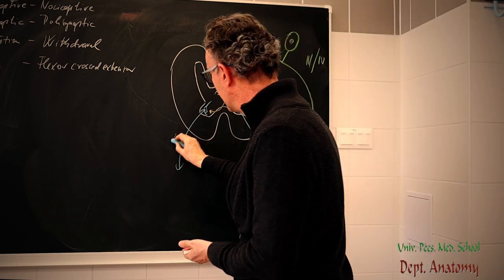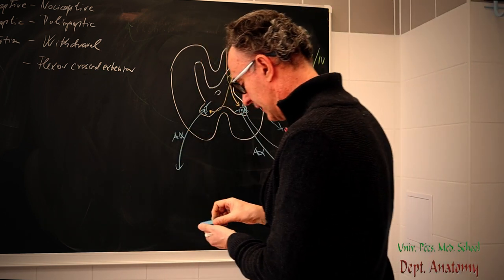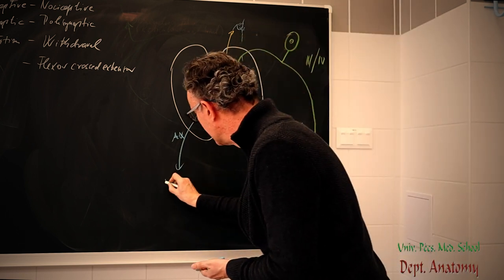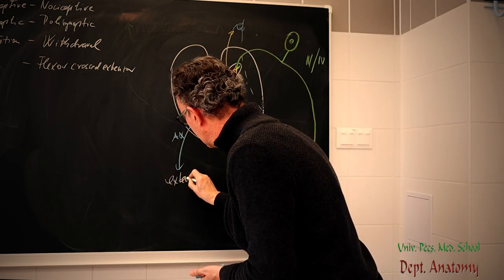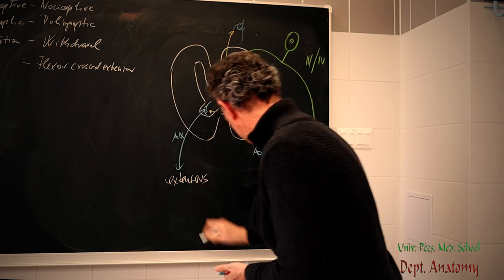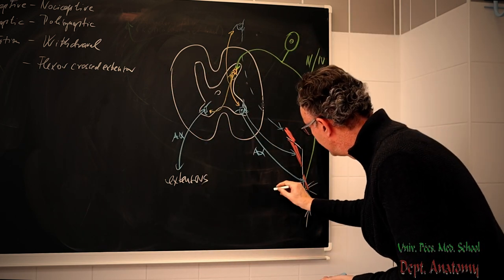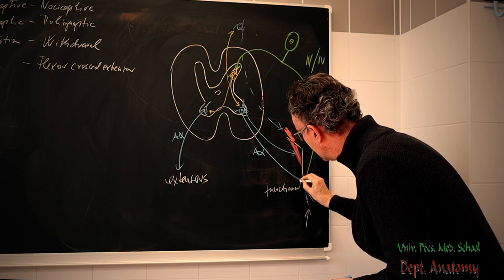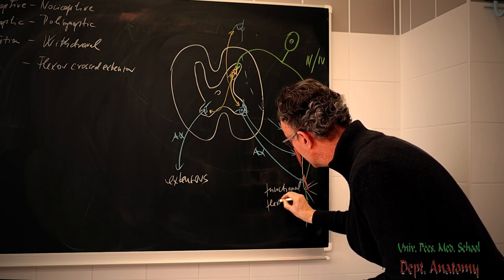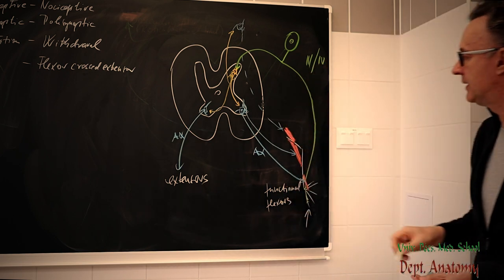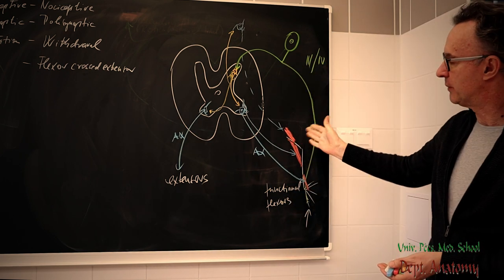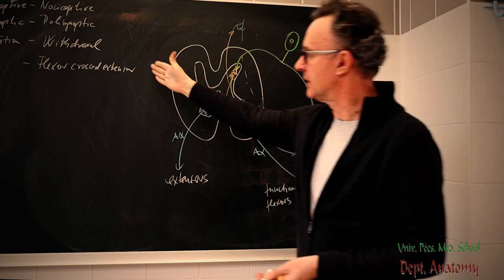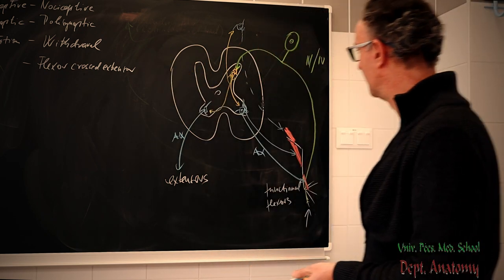And we have some interneurons, which are able to cross to the other side. To activate the extensors of the contralateral extremity. So, these are very thick, A-alpha type fibers. And the target would be the extensors in this case. Functional flexors are activated with these afferent fibers. But contralateral extensors. So, this way, this synonym is also valid now.